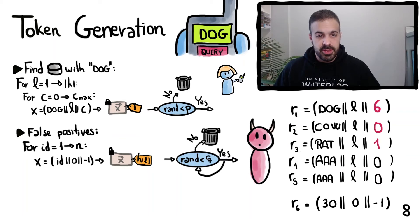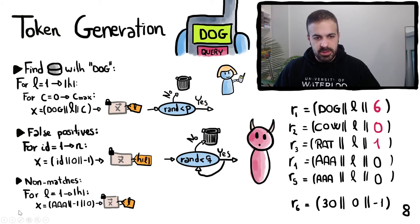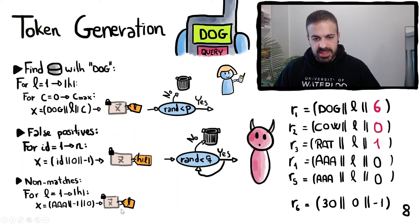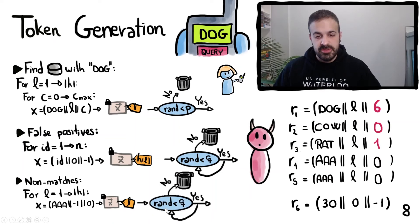Finally, notice that some of the query tokens that Alice sends to the adversary will not match any of the polynomials. We call these non-matches and we also want to hide them from the adversary. For this we have a final loop where for every possible label we generate the point 'aaa' — a keyword that doesn't exist in the alphabet — concatenated with -1 and 0. This point is not a root of any polynomial, so by sending this query token the adversary will evaluate it in all polynomials with label l and it will be a non-match. We generate non-matches also following a geometric distribution as we did with the false positives.